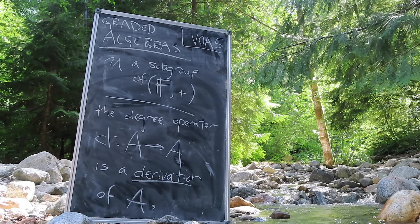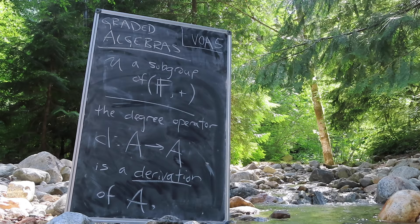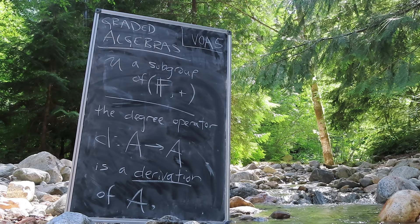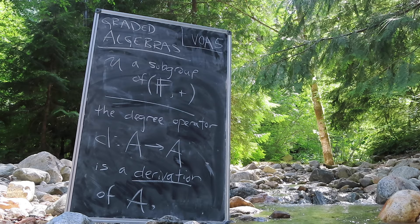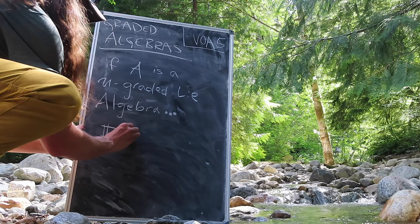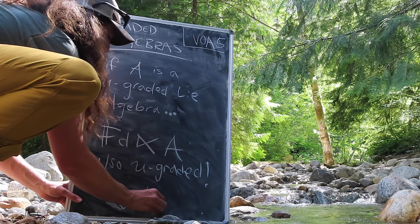Now let's consider some effects of an even tighter restriction on U. Suppose that U is a subgroup of field addition, and let A be a U-graded algebra. In this case, the degree operator is actually a derivation of A, because we can take that plus sign seriously. We call D the degree derivation. We can adjoin the degree derivation to A, and this semi-direct product algebra is also U-graded. Note that the degree of the degree derivation is zero.